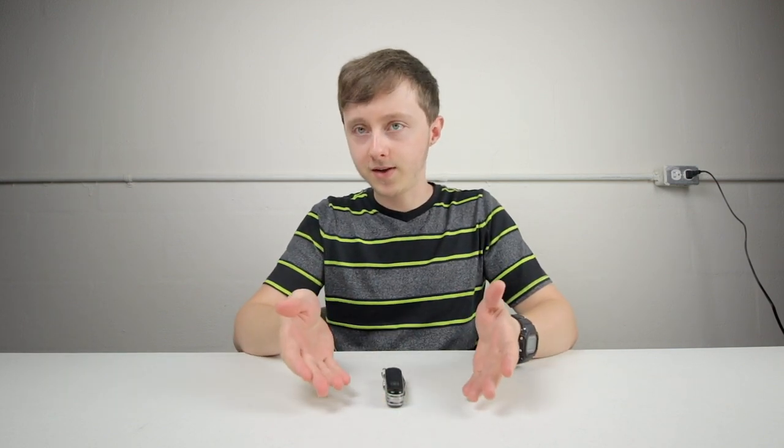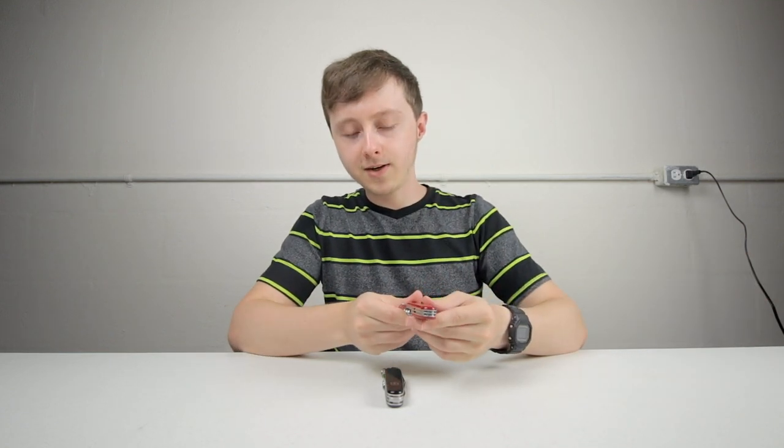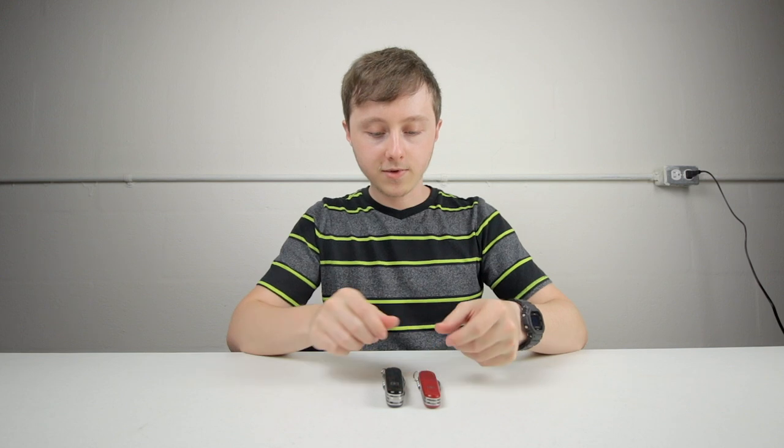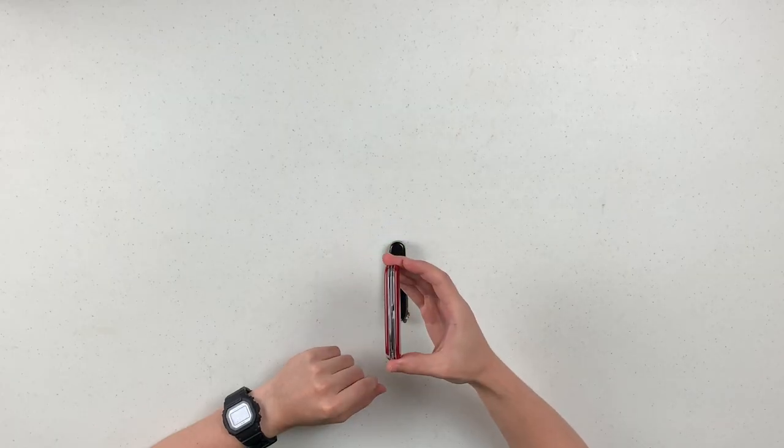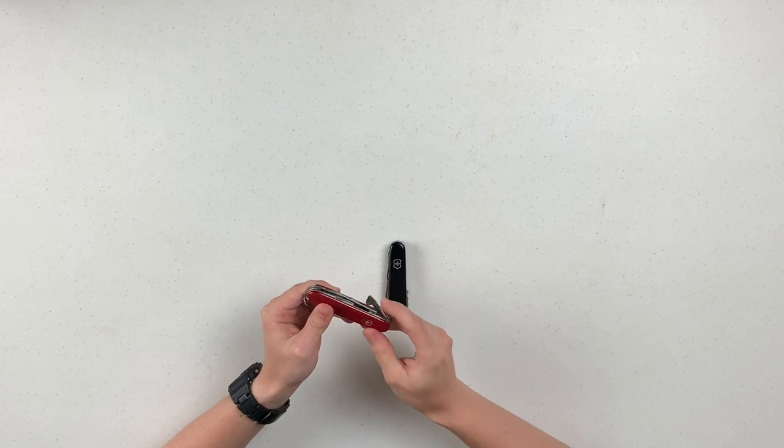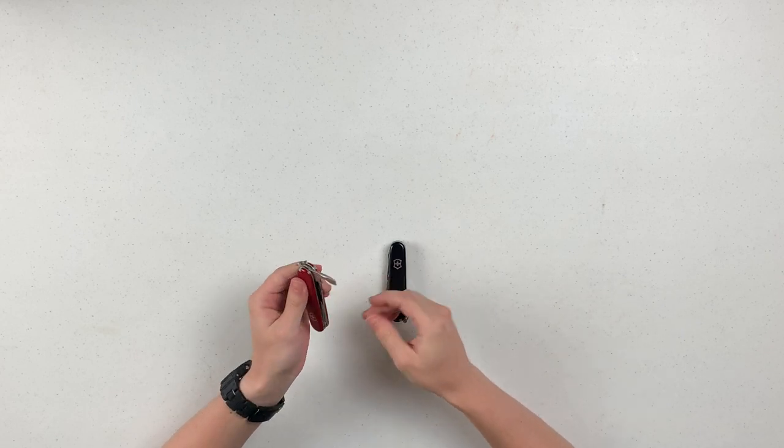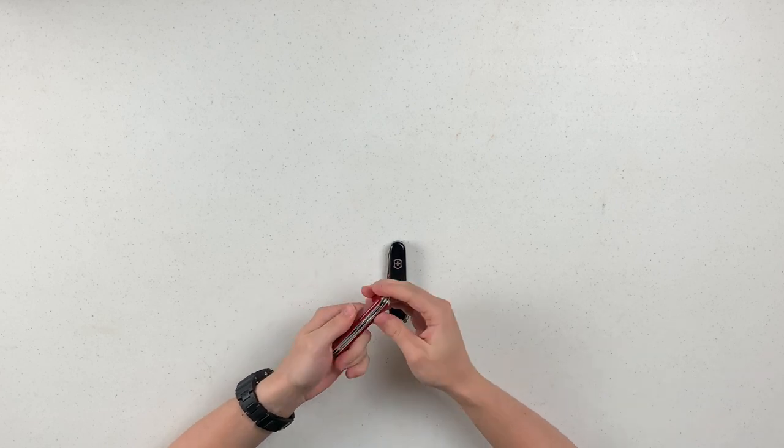So just some context for what this thing is. If you've seen the Swiss Army knife Spartan which is like the generic Swiss Army knife you see in most every store, it's the two-layer. It has the can opener, bottle opener, and then this screwdriver or pry tool, and then the main blades.